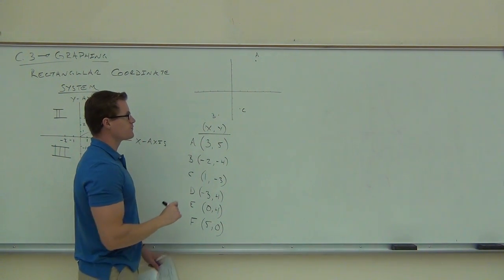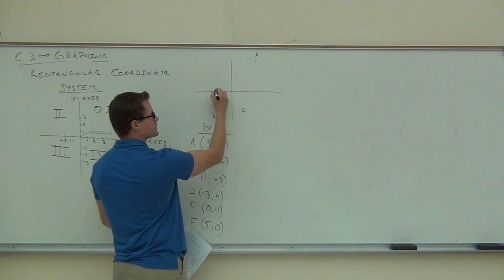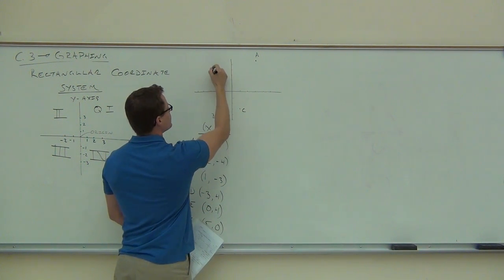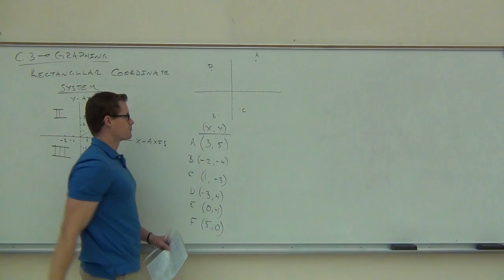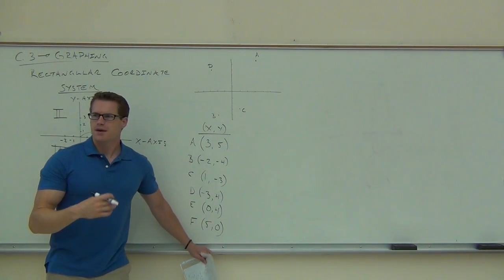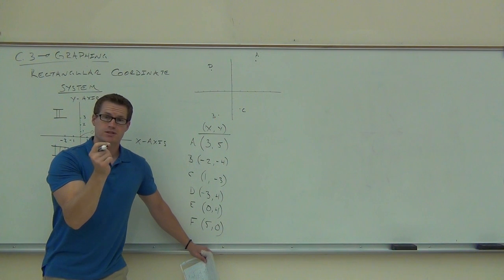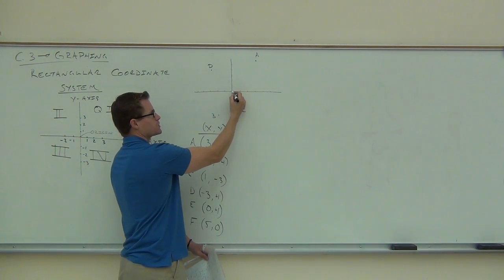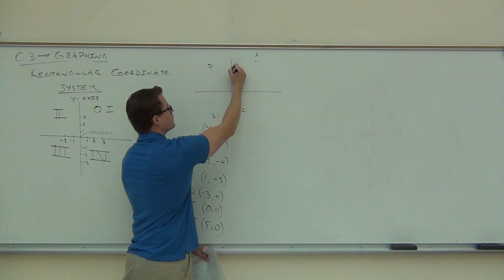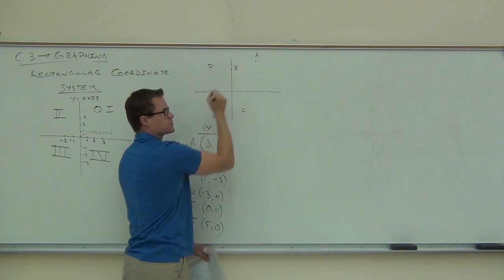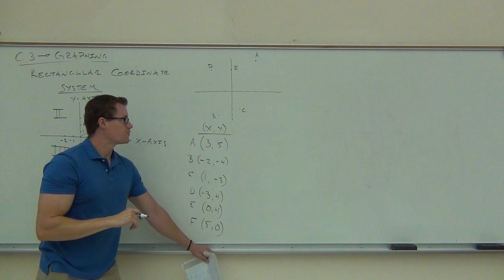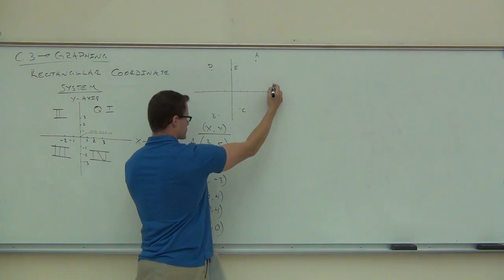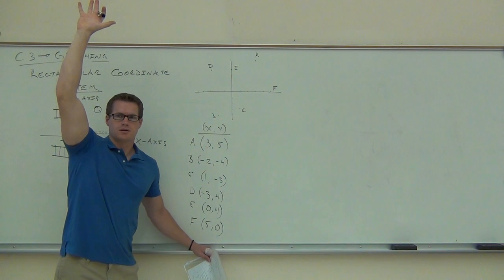Point D is negative 3, 4: from the origin, go 1, 2, 3 to the left — that's our X coordinate first — then 4 up. Point E is (0, 4): since X is 0 you don't go over at all, just up 4 from the origin. Point F is (5, 0): go positive 5 on the X axis but don't go up or down at all. How many people have all of these points correct?